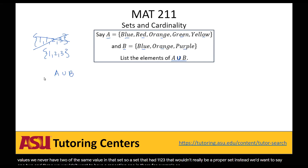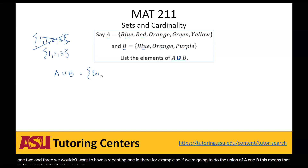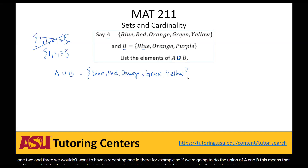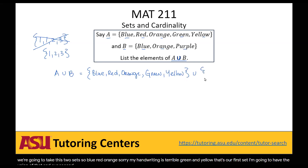So if we're going to do the union of A and B, this means that we're going to take these two sets. So blue, red, orange — sorry my handwriting is terrible — green, and yellow. That's our first set. And we're going to have the union of that and our second set B, which has blue, orange, and purple in it.